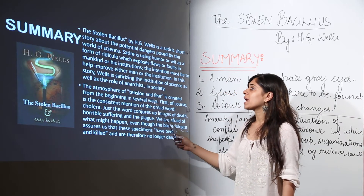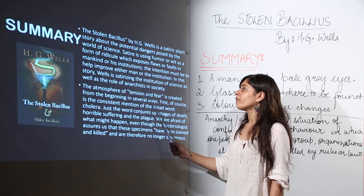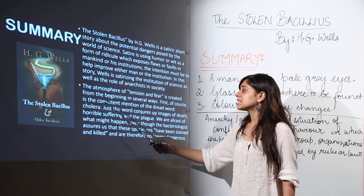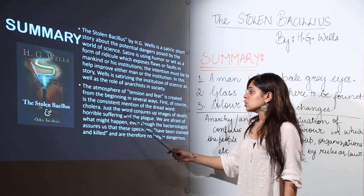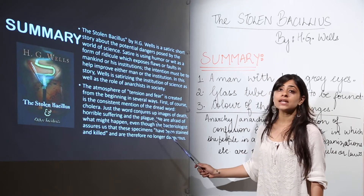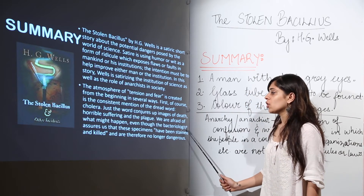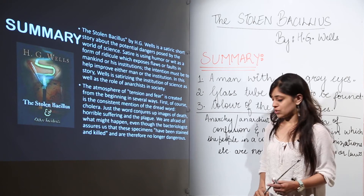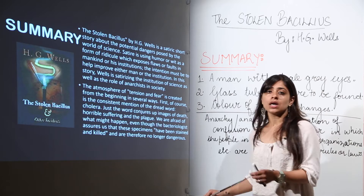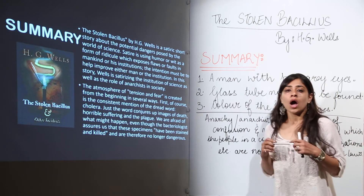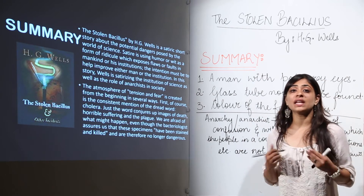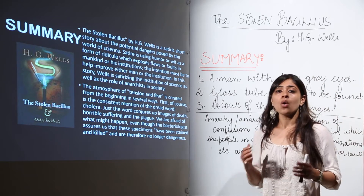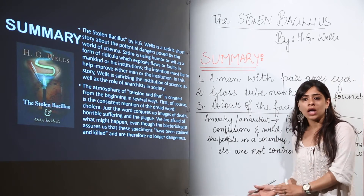In this story, Wells is satirizing the institution of science as well as the role of anarchists in society. An atmosphere of tension and fear is created from the beginning in several ways. First is the consistent mention of the dread word 'cholera' — just the word conjures up images of death, horrible suffering, and the plague. We are afraid of what might happen even though the bacteriologist assures us that the specimens have been stained and killed and are therefore no longer dangerous. The word cholera is used as another word for death, creating a dreadful impact from the very beginning.